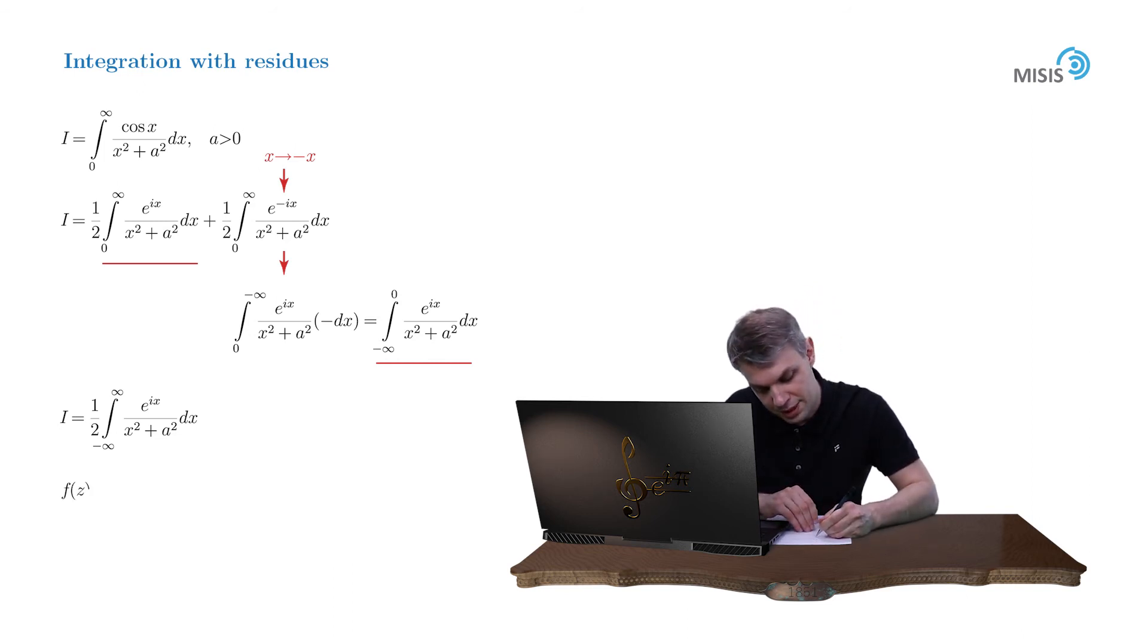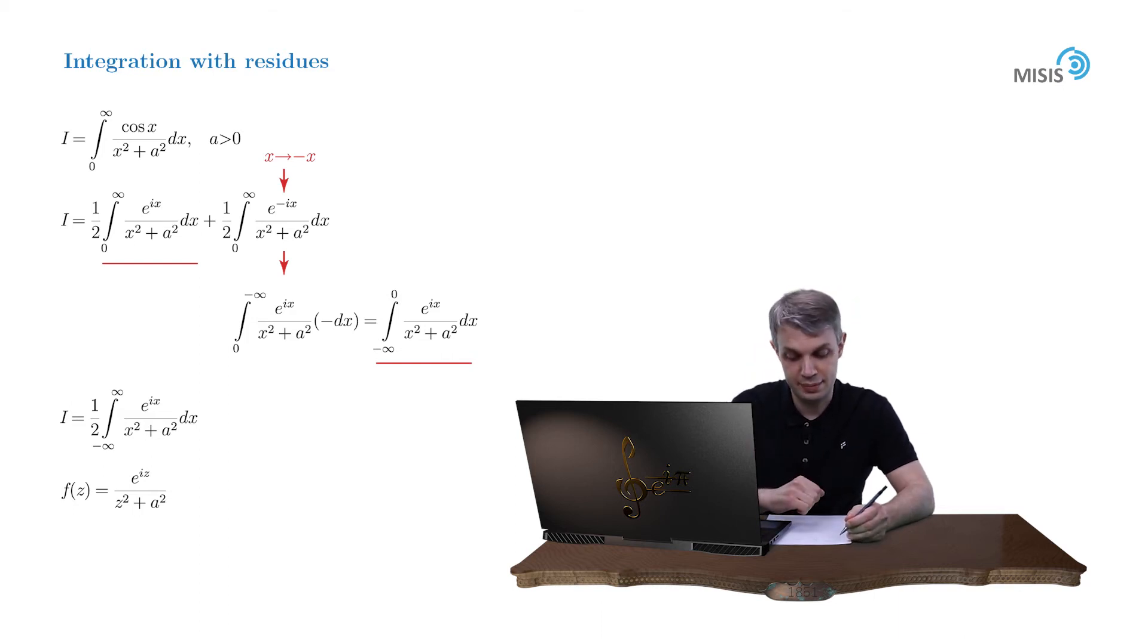We promote our integrand into a complex plane and denote it as a function f of z, and complete our contour with an upper semicircle.